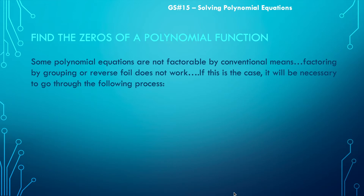To find the zeros of a polynomial function, remember that zeros are x-intercepts. So how do you find an x-intercept? You set the equation equal to zero and solve for x. So if a polynomial is not factorable — if we can't factor by grouping or use reverse FOIL — we need to go through a different process.